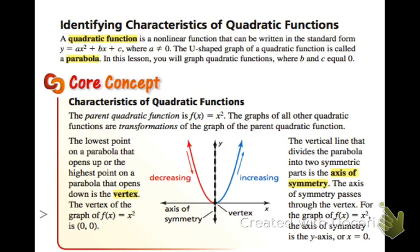So the lowest point on a parabola that opens up, or the highest point on a parabola that opens down, is called the vertex. And in this drawing, you can see the vertex of the parent graph is the origin, 0, 0. The vertical line that divides the parabola into two symmetric parts is called the axis of symmetry. So it's always going to be a vertical line. And in this case, it is x is equal to 0. It is also the y-axis. So it's the line that passes through the vertex.